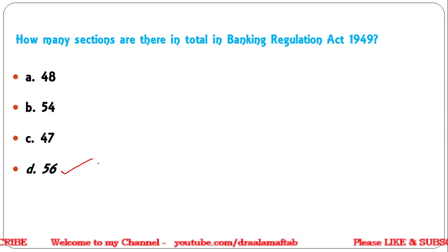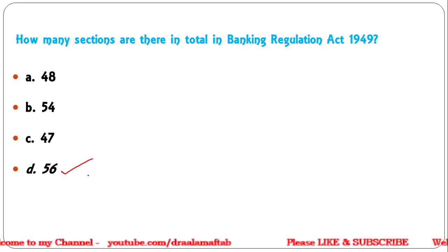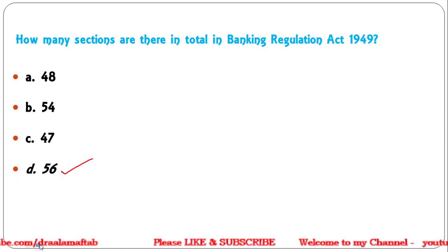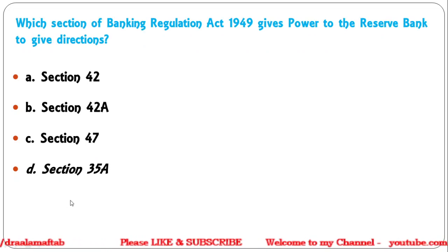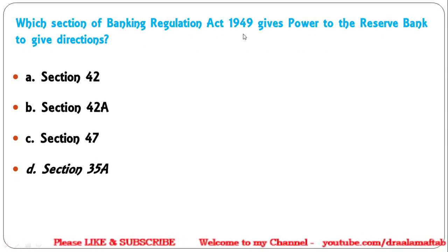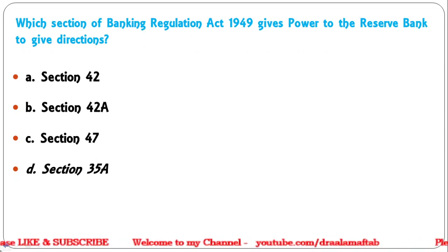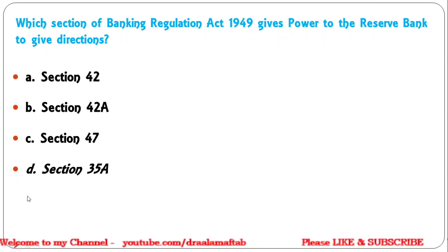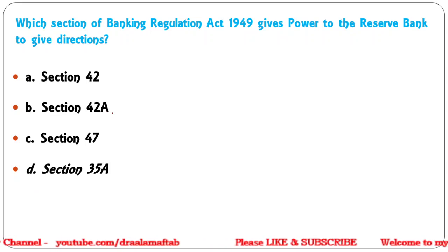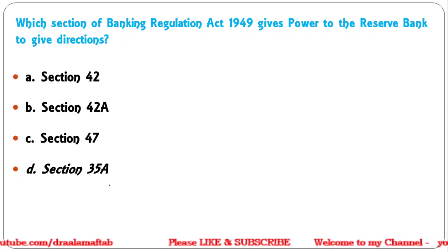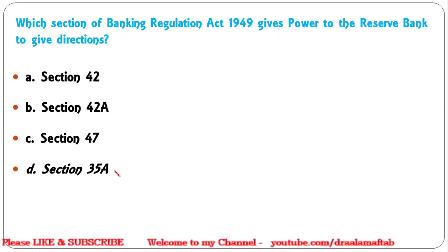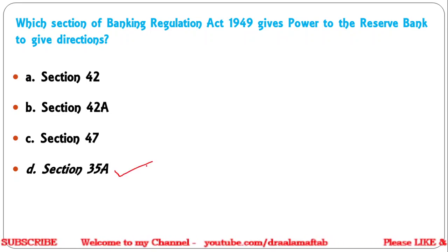Next question: Which section of the Banking Regulation Act gives RBI the power to give directions? Options: Section 42, 42A, 47, or 35A. The correct answer is Section 35A of the BR Act 1949 — under this section RBI has the power to give directions.